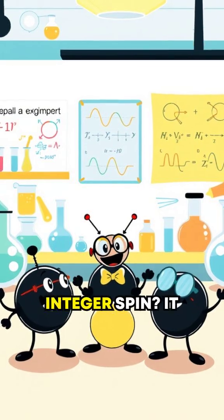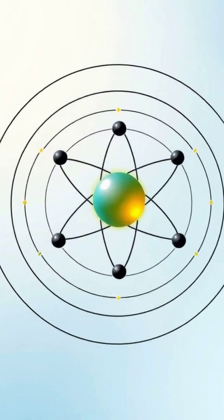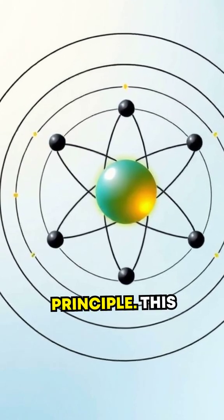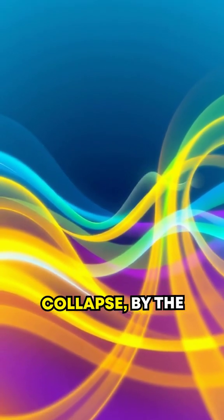And this half-integer spin? It means electrons are fermions, which obey the Pauli exclusion principle. This is why atoms don't collapse, by the way.